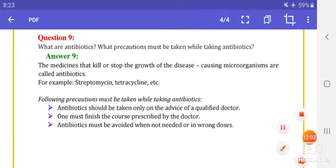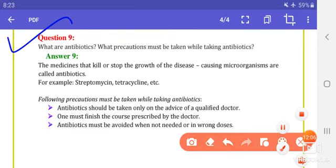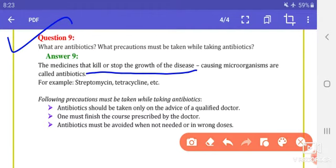Question 9: What are antibiotics? What precautions must be taken while taking antibiotics? The medicines that kill or stop the growth of disease causing microorganisms are called antibiotics. For example, streptomycin and tetracycline.